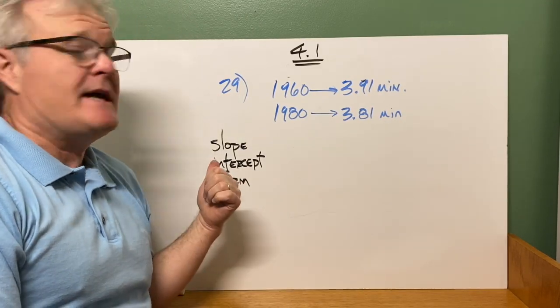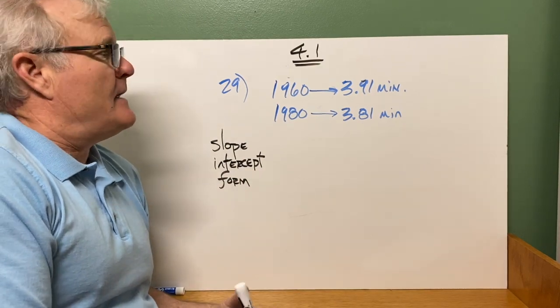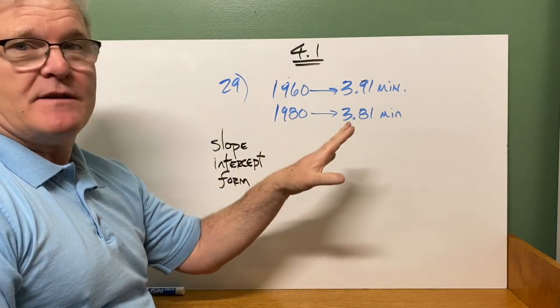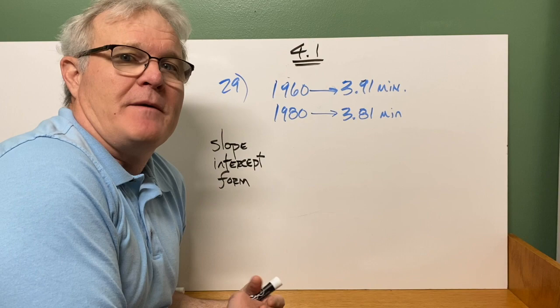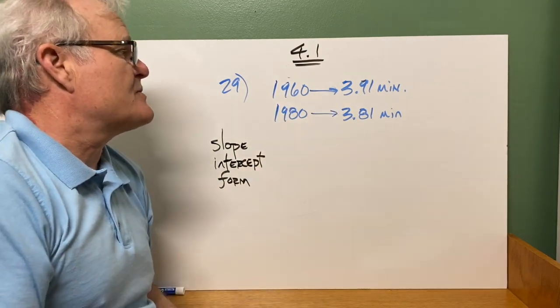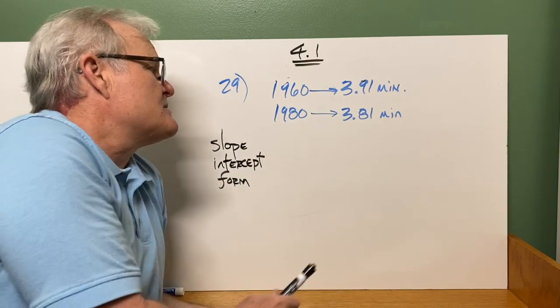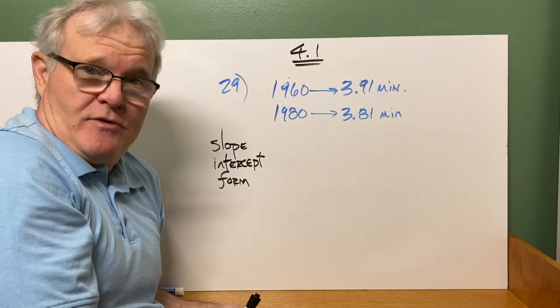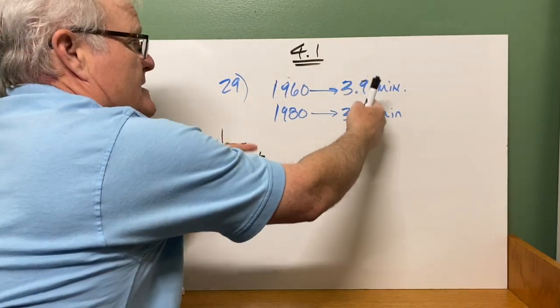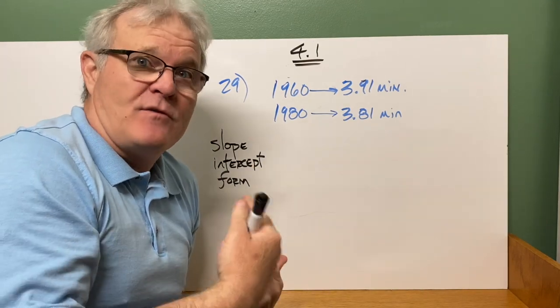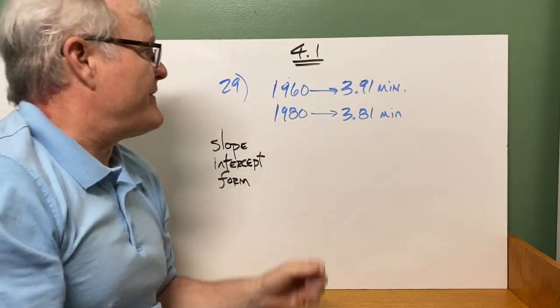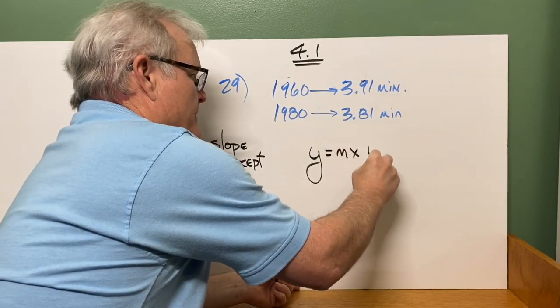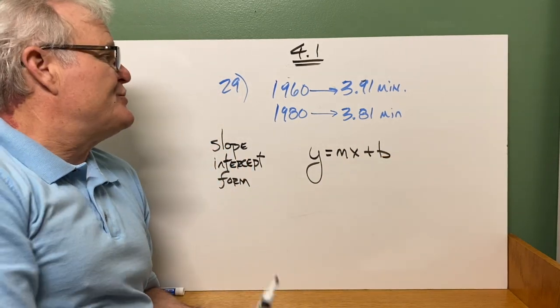Let's take a look at problem number 29 from section 4.1. Because this problem might give you a little bit of trouble. So it's basically a story problem dealing with the world record for the mile. And in 1960, it was 3.91 minutes. And in 1980, it was 3.81 minutes. Which makes sense. So the time is coming down as the time increases. We know we're looking at a negative rate of change. So to find this, we're going to do slope-intercept form. Remember, is y equals mx plus b. To do this problem, what you're going to do is you're going to base this off of 1960.